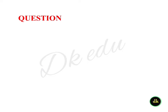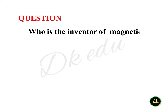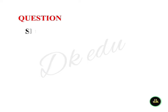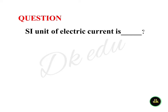Who is the inventor of the magnetic field? Answer: William Gilbert. The SI unit of electric current is? Answer: Ampere.